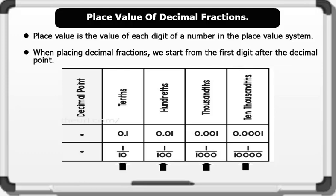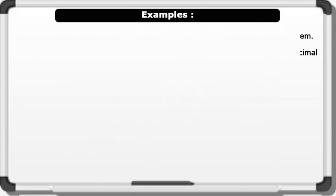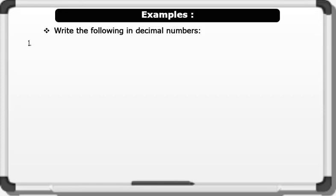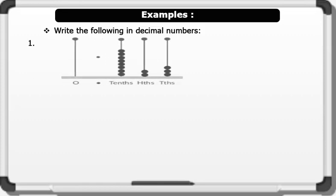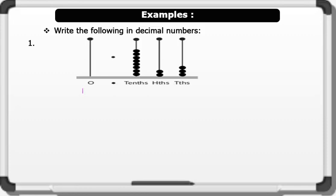Now let's see an example. Write the following in decimal numbers. Example 1 — see the image on the board. Let's count together: 0 is placed in the ones column. We bring down the decimal point. 8 is placed in the tenths column. 2 is placed in the hundredths column. And 3 is placed in the thousandths column. This gives us 0.823 in decimal.